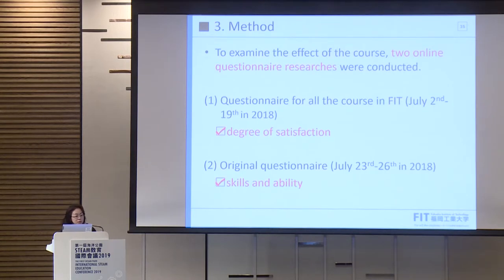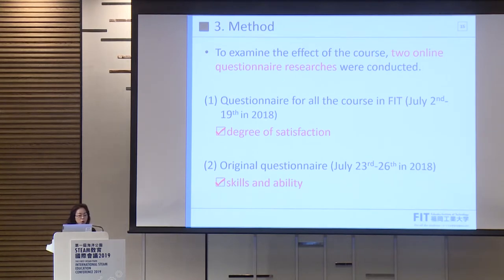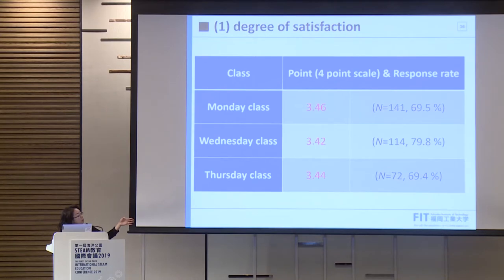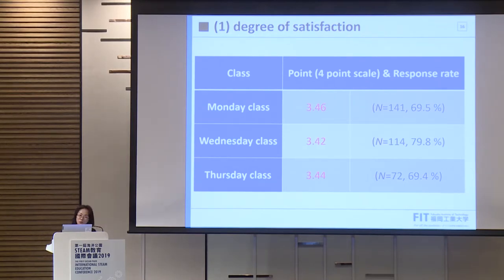Regarding the method used to examine the effect of the course: online questionnaire research was conducted. The first questionnaire covered all courses in the institute, measuring degree of satisfaction. The second questionnaire was an original one focused on skills and ability. For the first questionnaire, a four-point scale was used, and the response rate is shown here. There were three class sessions — Monday, Wednesday, Thursday — and relatively high scores were observed, even for this first-year curriculum, which surprised us since first-year subjects often score below 3.2.